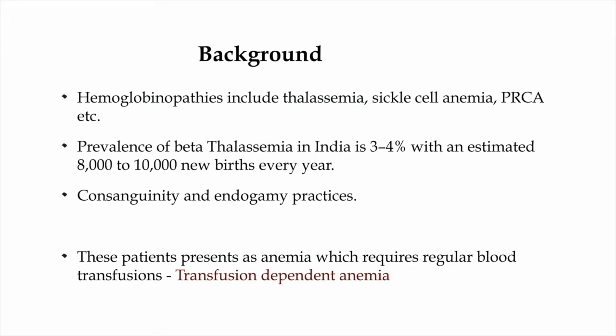Hemoglobinopathies include diseases like thalassemia, sickle cell anemia, and pure red cell aplasia. The prevalence of beta thalassemia in India is quite high at around 3 to 4 percent, which can be attributed to consanguinity and endogamous practices. In thalassemia there is a deficiency of hemoglobin synthesis, so all these patients will present with features of anemia throughout their lifetime, and to manage these symptoms, patients will require regular blood transfusions. This anemia is therefore referred to as transfusion-dependent anemia.